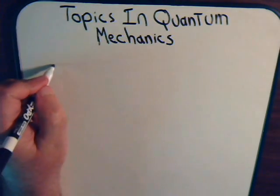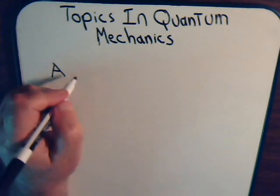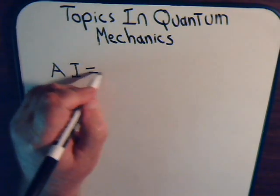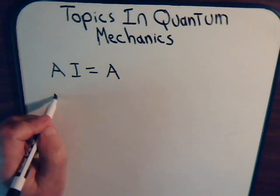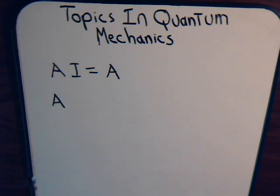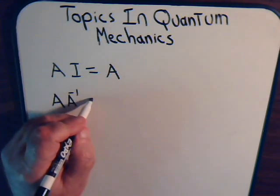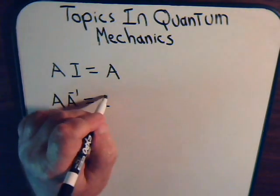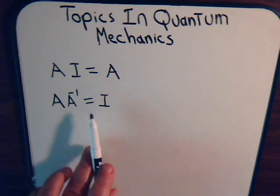If we have a certain matrix A, we can multiply it by the identity matrix, and that just gives back the original matrix we are working with, matrix A. Another way of defining the identity matrix is: if A has an inverse, then A times A inverse is equal to the identity matrix. And really, these two definitions are the same.